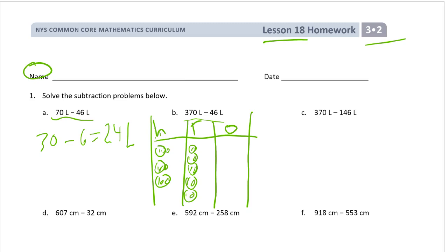We need seven tens, and we only have five, so we need two more tens. Now we need to subtract 46, so we have to unbundle a ten.